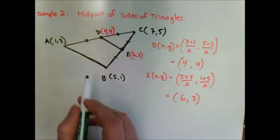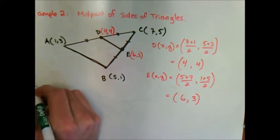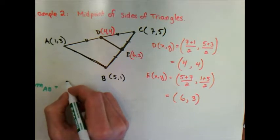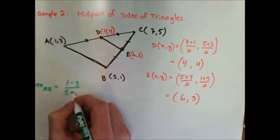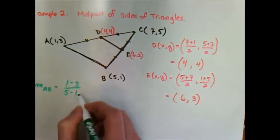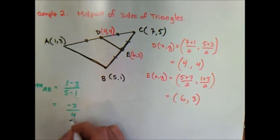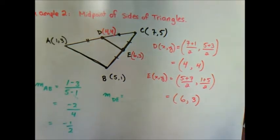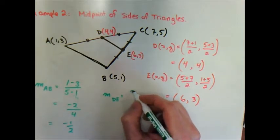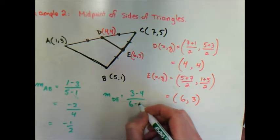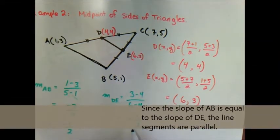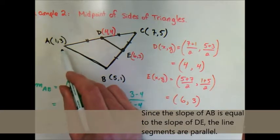Now I can find the slopes. The slope of AB = (1 − 3)/(5 − 1) = −2/4 = −1/2. The slope of DE = (3 − 4)/(6 − 4) = −1/2. Since the slopes are equal, this verifies that line segment DE is parallel to side AB.